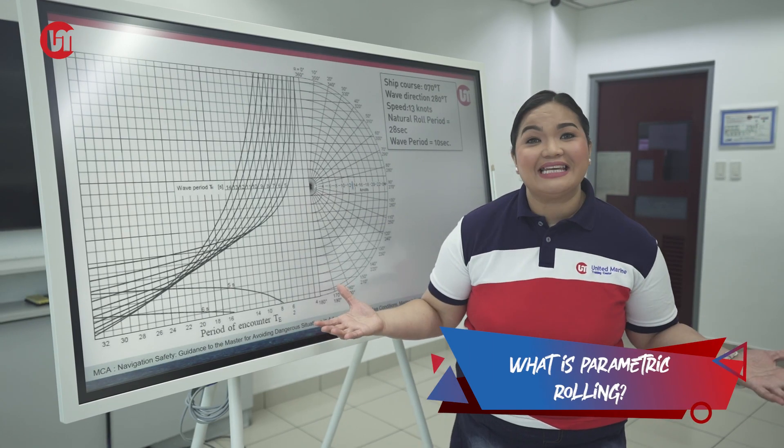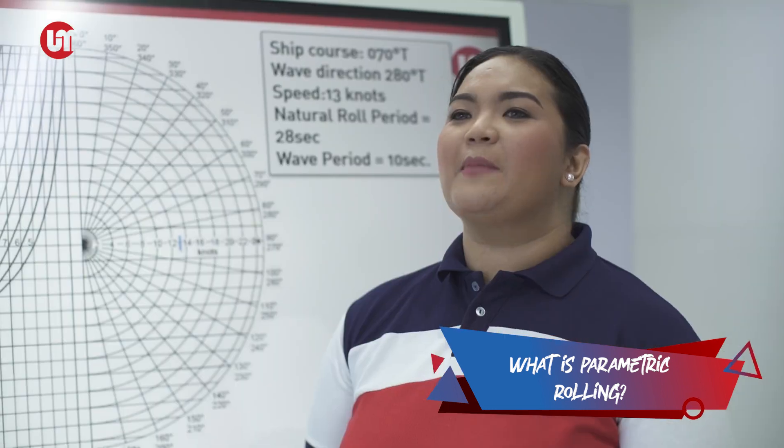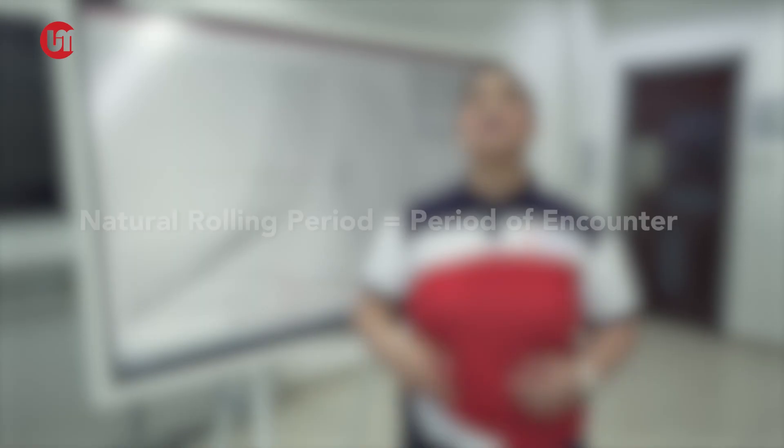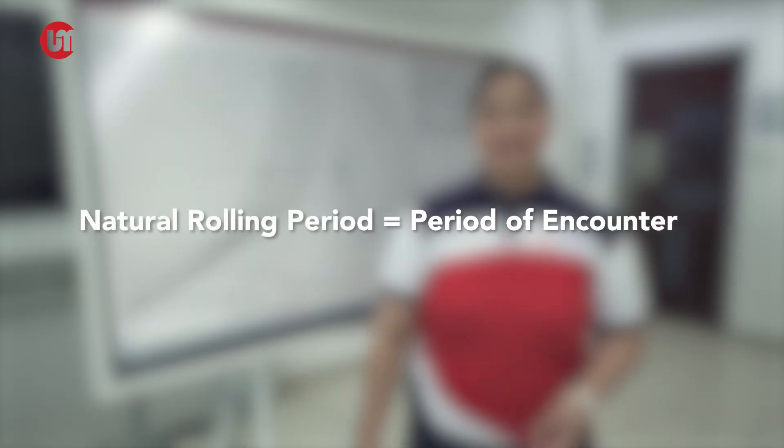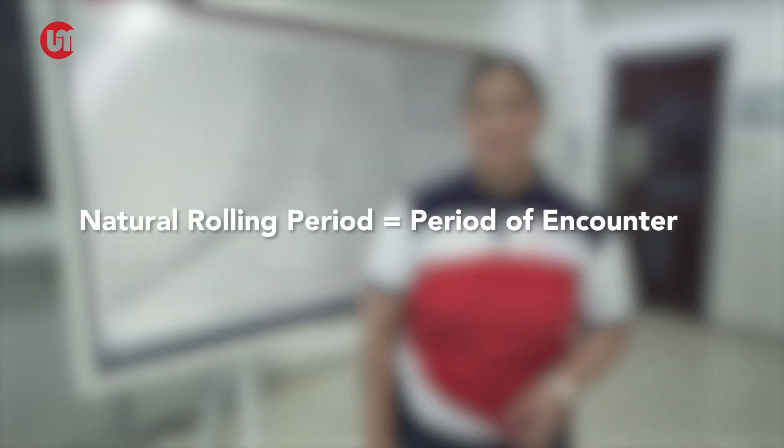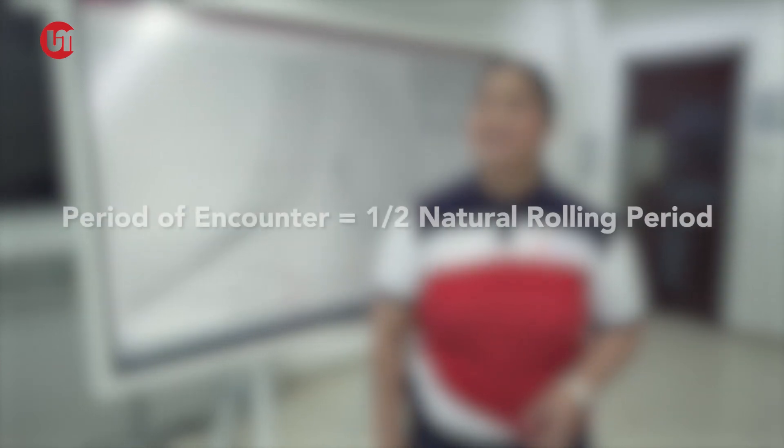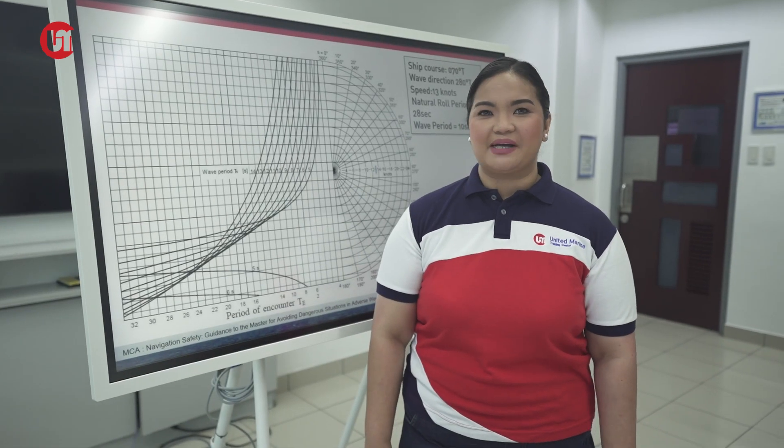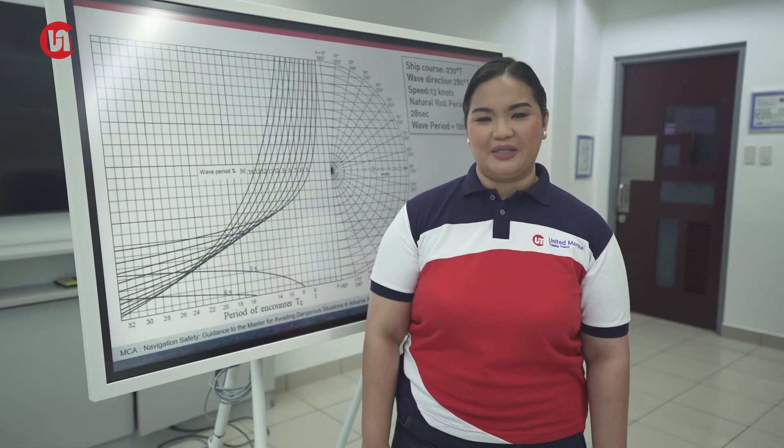But first, what is parametric rolling? Parametric rolling is experienced by the vessel when it's transiting in adverse weather. If the natural rolling period of the vessel is equal to the period of encounter, or the natural rolling period of the vessel is twice the period of encounter, then the vessel will experience parametric rolling.